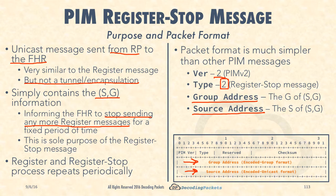What the RP achieves with the register stop message is telling the FHR to stop sending any more register messages, because register messages are unicast and you want to receive traffic via multicast. Once the RP ascertains it has enough information to receive packets via multicast, it tells the first hop routers to stop the registration process. In a steady state network, the null register and register stop messages keep repeating periodically — the FHR sends a null register, the RP responds with a register stop, putting the FHR in a hold-down pattern for the agreed upon time.